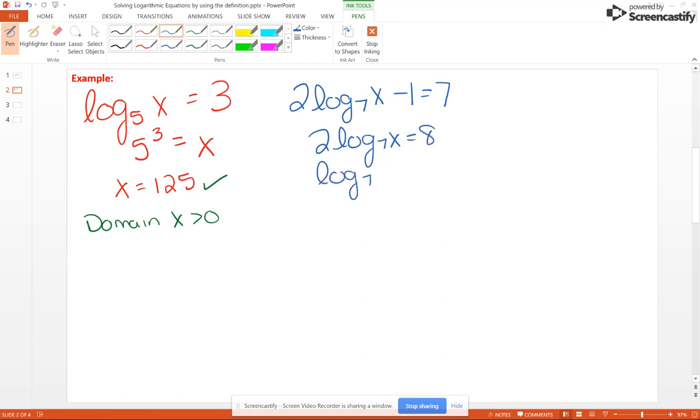So log base 7 of x equals 4, and now our log term is isolated. So we take the base, raise it to the right-hand side – so 7 to the 4th power – equals x. Now 7 to the 4th power, we get 2,401.